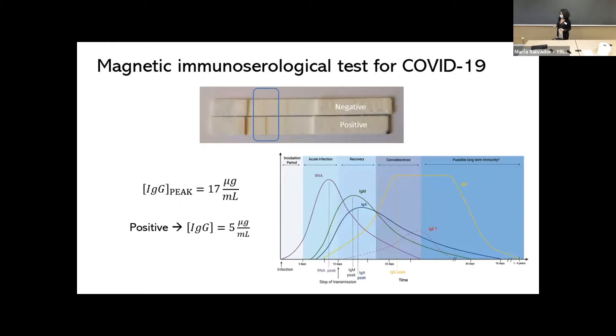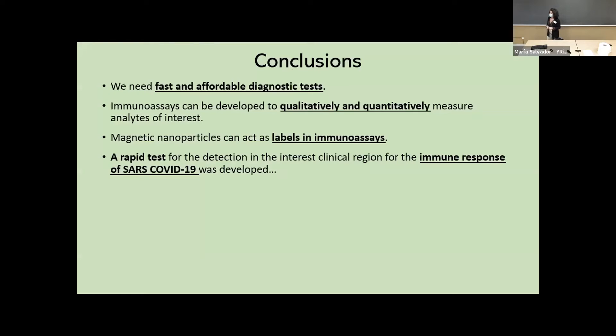So I would like you to remember this graph from the previous slides. And as I told you, the IgG, even if it was the one that appears a little bit later, usually reaches a maximum of 17 micrograms per milliliter. But this positive test has a concentration of about five micrograms per milliliter. So in this case, we are around this zone, which is a really good zone to monitor the evolution of the immune response in the population. So these were very interesting results.